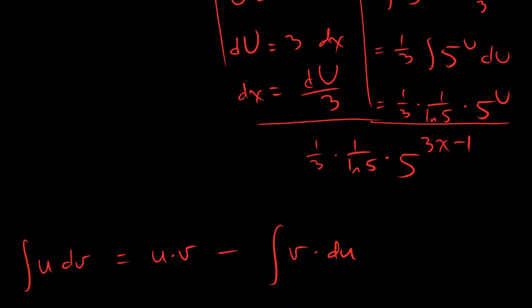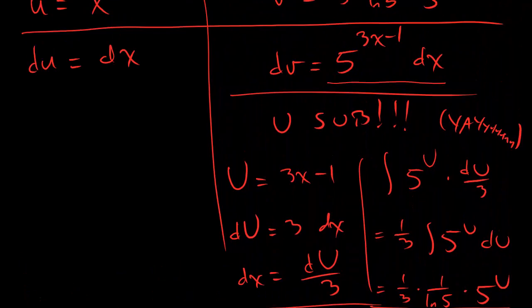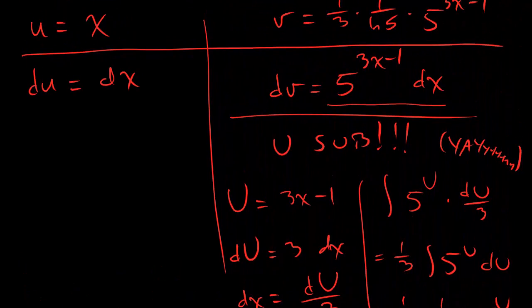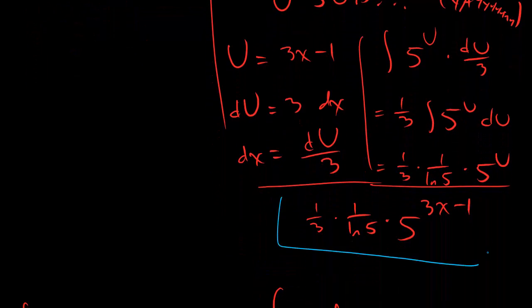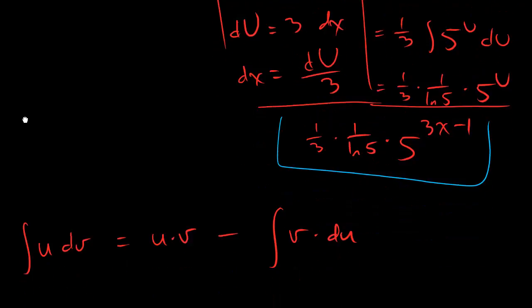If you scroll up, check it out, we already had this thing that was like, hey, we've got a 5 to the 3x minus 1, we want to figure out what the anti-derivative is. And so we went ahead and we did the u-substitution in all this horrible cluttered sense, and we got this sucker as our final answer.